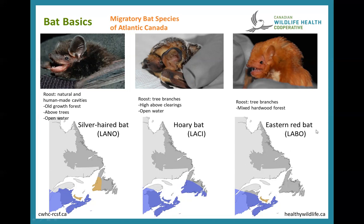The eastern red bat, with its beautiful orangey-red fur, is found in most of New Brunswick and Nova Scotia. Acoustic records show it's also in Prince Edward Island, though it hasn't been visually observed there. It has not been detected in Newfoundland and Labrador so far. Like the hoary bat, it roosts by hanging off tree branches — often appearing to mimic pine cones — and is most often found foraging in and over mixed hardwood forests.